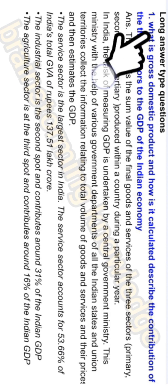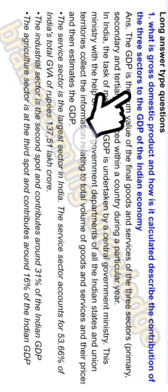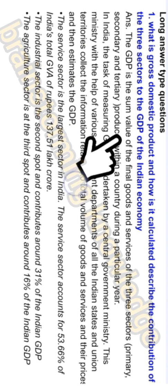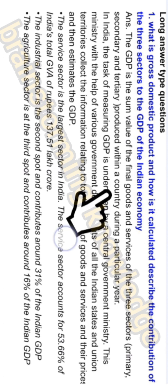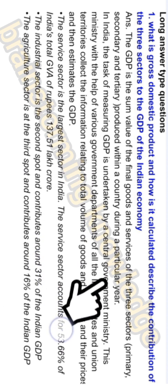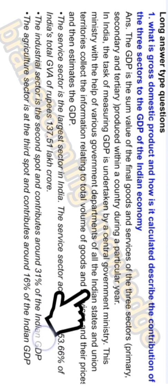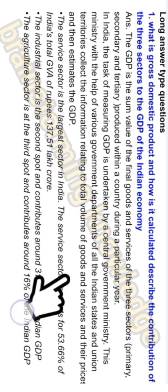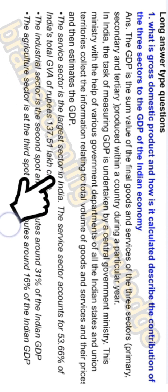Long answer question one: What is Gross Domestic Product and how is it calculated? The GDP is the sum value of all final goods and services of the three sectors — primary, secondary, and tertiary — produced within a country during a particular year. In India, the task of measuring GDP is undertaken by a central government ministry, which with the help of various government departments of all Indian states and union territories collects information on the total volume of goods and services and their prices to estimate GDP.